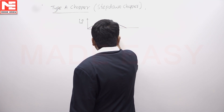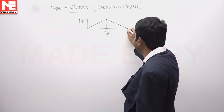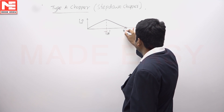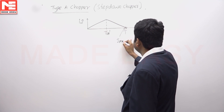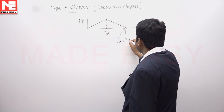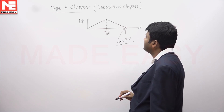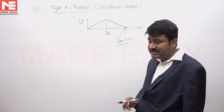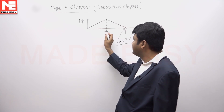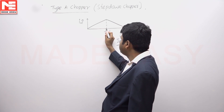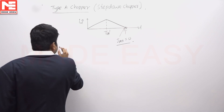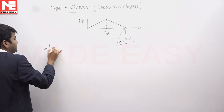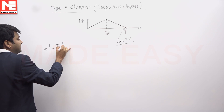This is T_on_dash and this is T. At this point, I_minimum becomes 0. This is the current waveform at the boundary between continuous and discontinuous conduction. We have to calculate the duty cycle which corresponds to the boundary between continuous and discontinuous. Here, the value of duty cycle is T_on_dash by T.